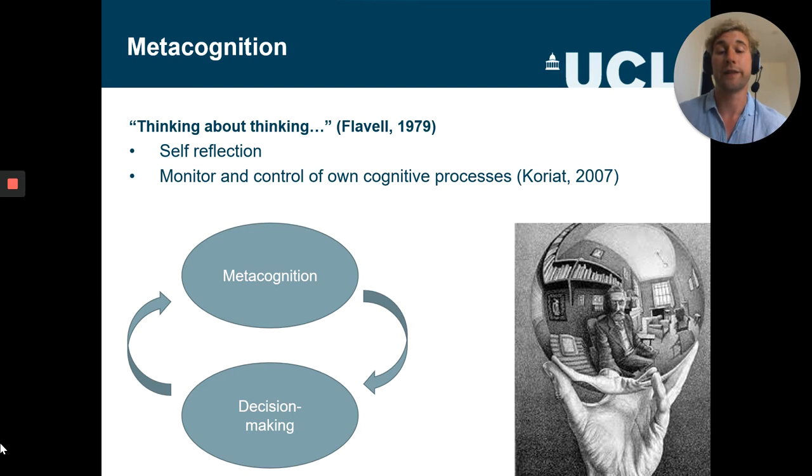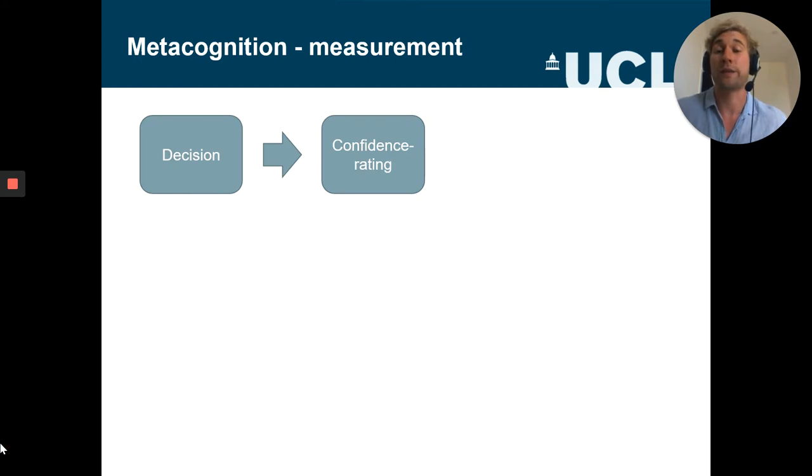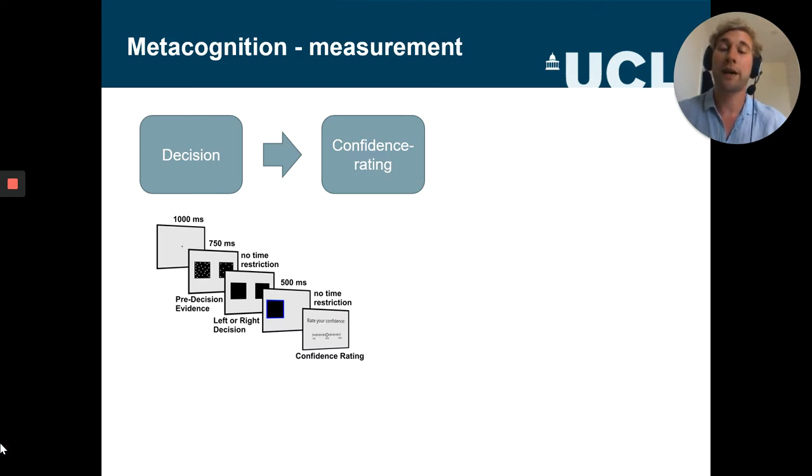In the context of decision making, that would mean that a metacognitive module is monitoring the decision process and can intervene if needed. So the way we study that in the lab is by asking participants to make simple decisions and then rate their confidence. Here you see an example task where participants are asked to rate whether there are more dots on the left or on the right side of the screen, and then after each decision they give a confidence rating.